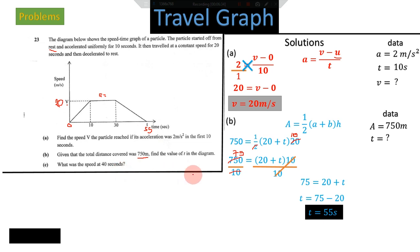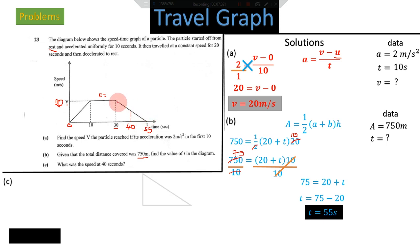Question (c): what was the speed at 40 seconds? We don't have 40 seconds marked, but you should know that 40 is between 30 and 55 — the value we just found. So 40 seconds falls within the deceleration phase. We extract that final triangle portion from the graph to work with.